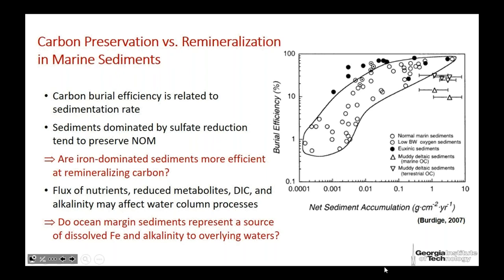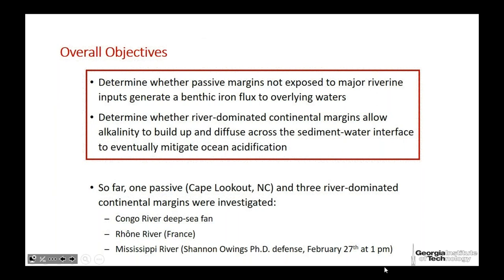We're asking whether ocean margin sediments represent a source of dissolved iron and a source of alkalinity to the overlying waters. The objectives are to determine whether passive margins — not exposed to major river inputs — generate benthic iron flux. Most work on iron flux has been done in upwelling zones because it's easier to measure. It's very challenging to measure benthic flux in non-upwelling systems, and nobody had done it before, so we had no clue if the majority of sediments on Earth would be a source of iron.